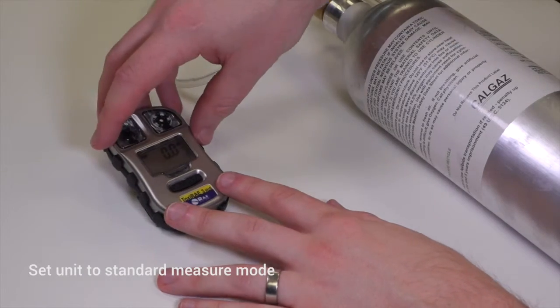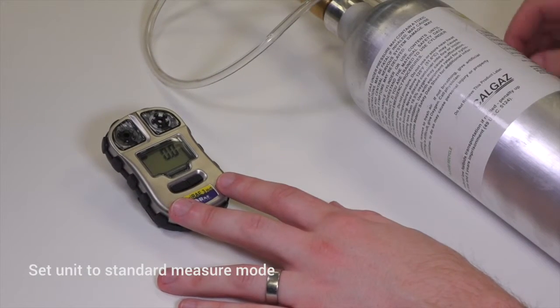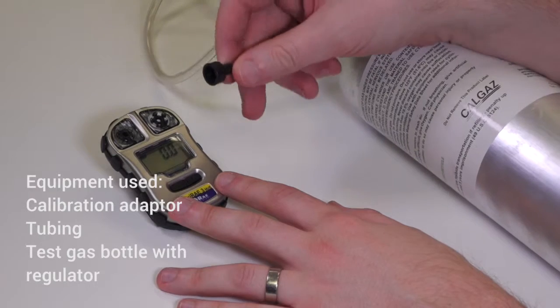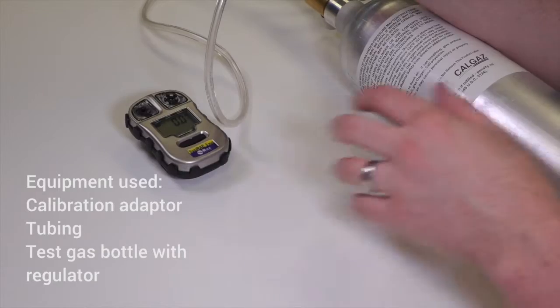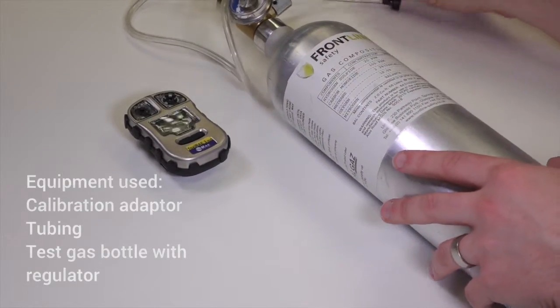Before you bump test the unit, it should be in standard measure mode. You'll need the calibration adapter which comes with the unit, calibration tubing, and a known concentration of calibration gas.